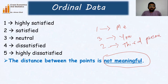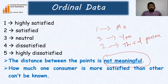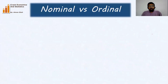The distance between two points in ordinal data is not meaningful. For example, suppose I am highly satisfied (code 1), a third person is satisfied (code 2), and you are neutral (code 3). We cannot identify how much more satisfied I am than that third person or you, because the distance between the two categories is not meaningful. It only tells us that I am more satisfied than you, but the magnitude of the difference between two categories cannot be known.